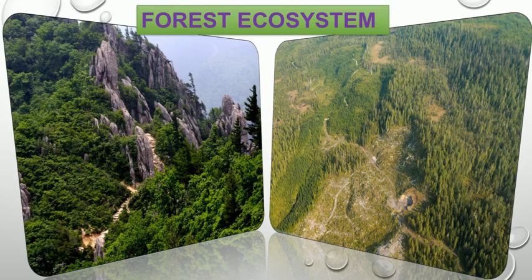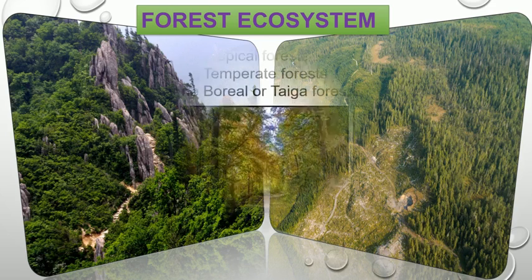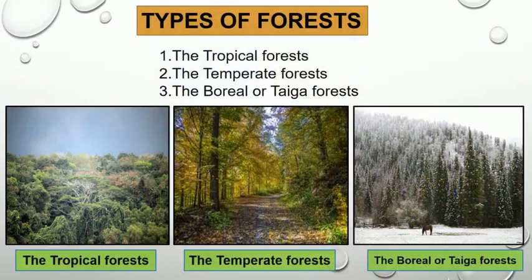A forest ecosystem, similar to any other ecosystem, also contains abiotic and biotic components. According to their distance from the equator, we can broadly divide the types of forest into the following types: first is tropical forest, second is temperate forest, and third is boreal and taiga forest.